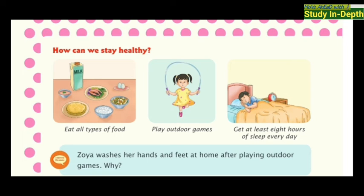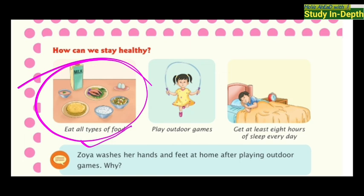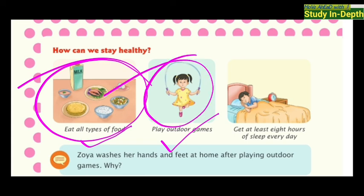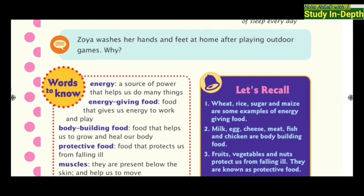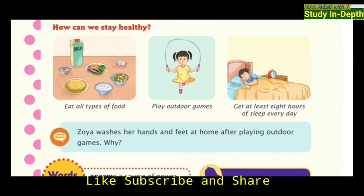How can we stay healthy? It is not only through food. Eating different kinds of food is good, but we also need other activities. You have to play outdoor games such as cricket and football. You also have to sleep at least eight hours every day. So food, exercise, and sleep together keep us healthy.